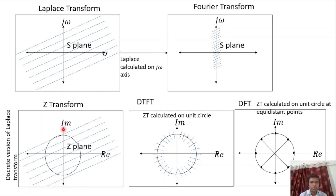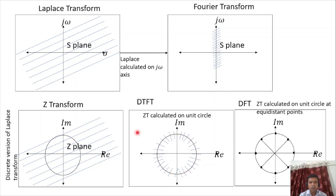The discrete version of the Laplace transform is the Z-transform, calculated in the complex Z-plane. The relationship between Z-transform and DTFT — the Discrete Time Fourier Transform used for discrete time domain signals — is as follows: if the j-omega axis from the S-plane is bent, it forms a unit circle. The Z-transform calculated on the unit circle becomes the DTFT.